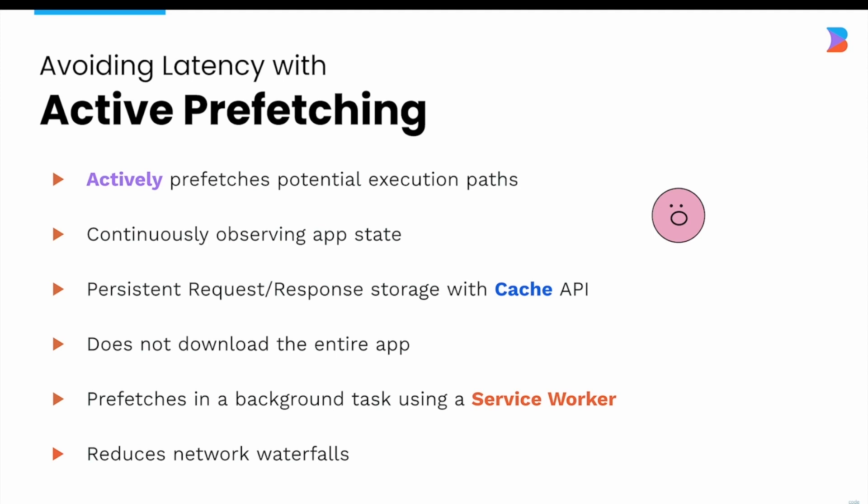Developers often point out that lazy loading on demand causes latency issues, which is usually true. However, Quick avoids this by actively prefetching what's possible — but that does not mean prefetching most of the application, only what's needed. For example, if the only thing a user can do is click a button, then that's the only module prefetched. The browser wouldn't download any render code or even the Quick framework itself — only the possible listener is prefetched. Instead of using the link tag, Quick City uses the Cache API, which offers better support compared to link rel module preload, and all this happens within a background task using a service worker.